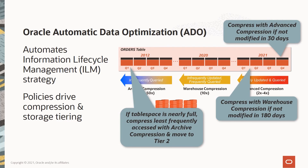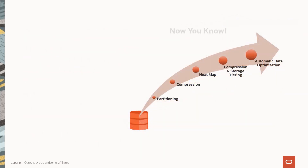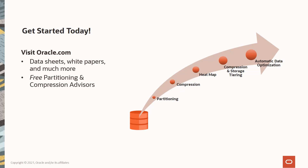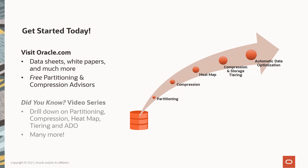As you can see, we have a great deal of flexibility when creating these policies. Oracle Automatic Data Optimization is completely transparent to our applications. So now you know you can enable your Oracle database to improve performance and maybe even defer your next storage purchase. To get started, make sure to check out these great resources on oracle.com, including the free partitioning and compression advisors already in your database, and be sure to check out the rest of our 'Did You Know' video series, where we take a closer look at each of the capabilities we covered today and a lot more. Thanks for listening.